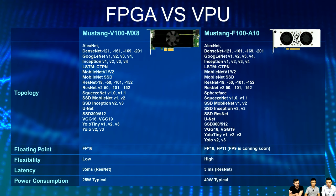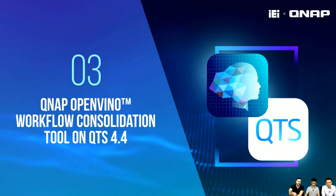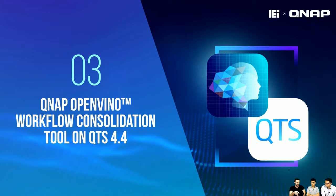Those are our Mustang accelerator cards for AI applications. We've now completed the first two parts: the OpenVINO introduction by Intel, and the IEI FPGA and VPU accelerator cards. We'll take a short break and then invite Kevin to join us for the third part.